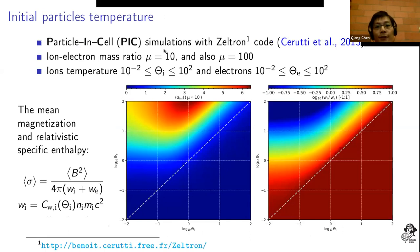We did particle-in-cell simulations with the Zeltron code. The particle mass ratio is set to be 10 and we also tried with 100. We cover a lot of temperature space.